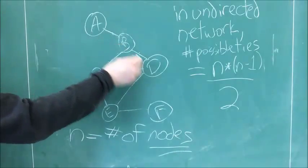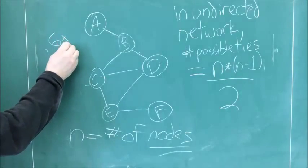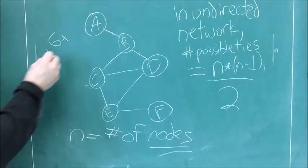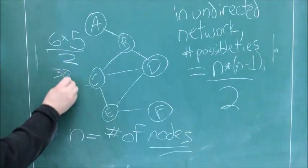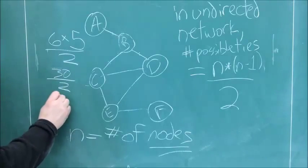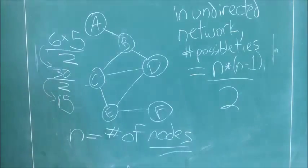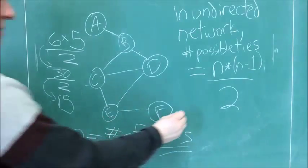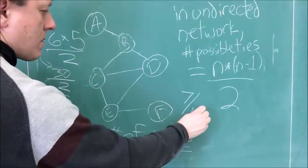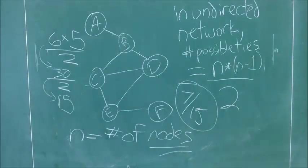So, if n equals the number of nodes, n times n minus 1 is the number of nodes times the number of nodes minus 1. How many nodes are there? Six in this example, so we would multiply 6 times 6 minus 1, which is 5, and then we divide that all by 2. That equals 30 divided by 2, or 15. So now we have an answer. The number of possible ties is 15. But remember, density is the number of actual ties, 7, divided by the number of possible ties, 15. Don't forget that last step. So, density is 7 divided by 15 in this case.